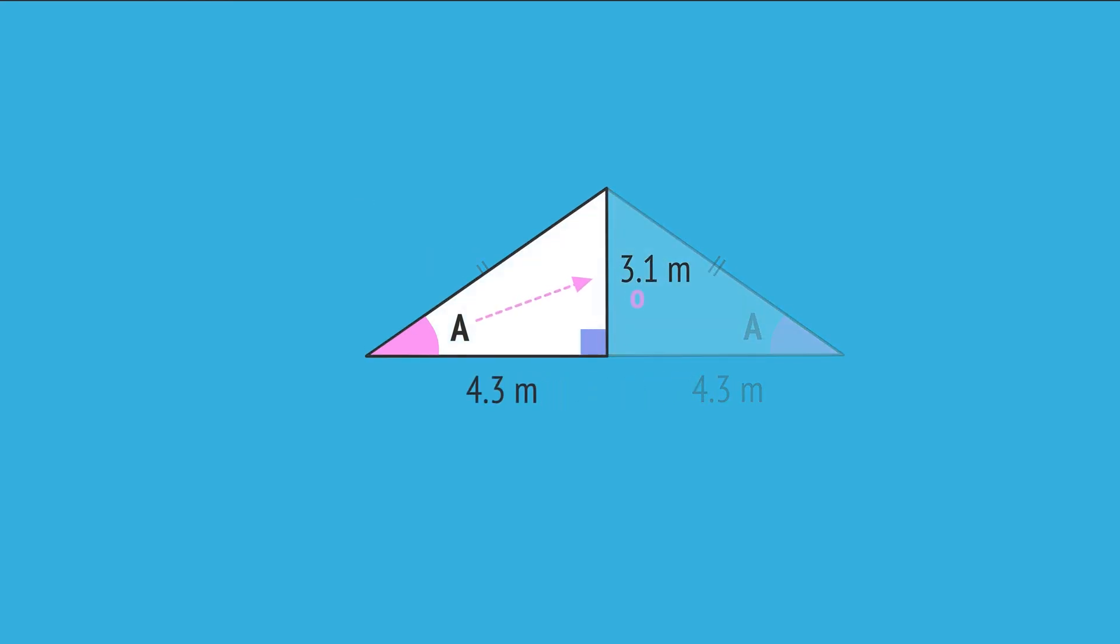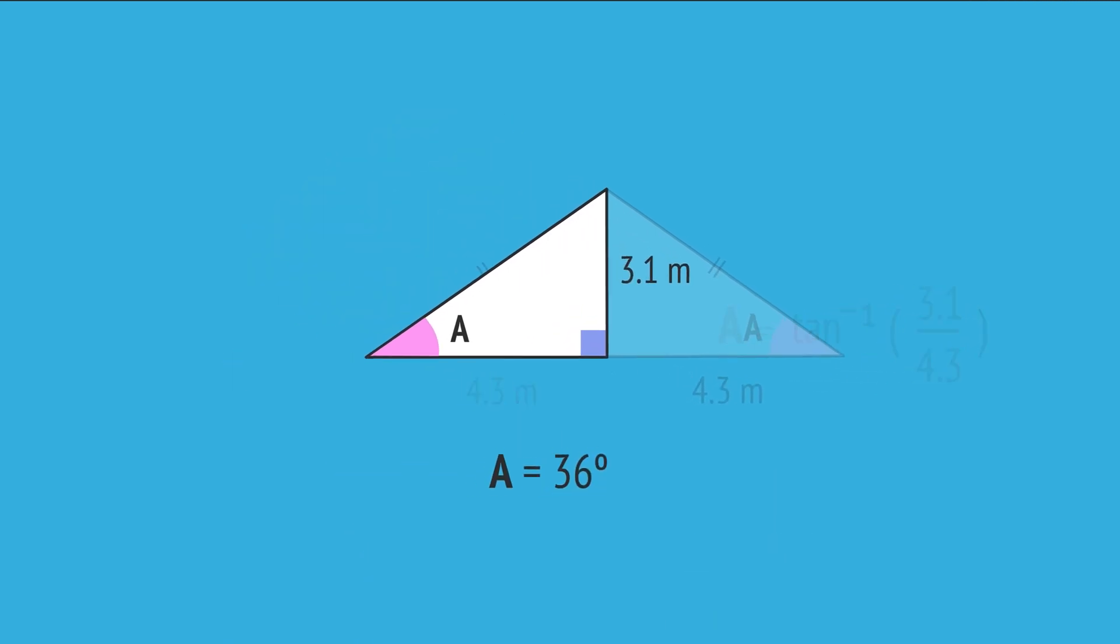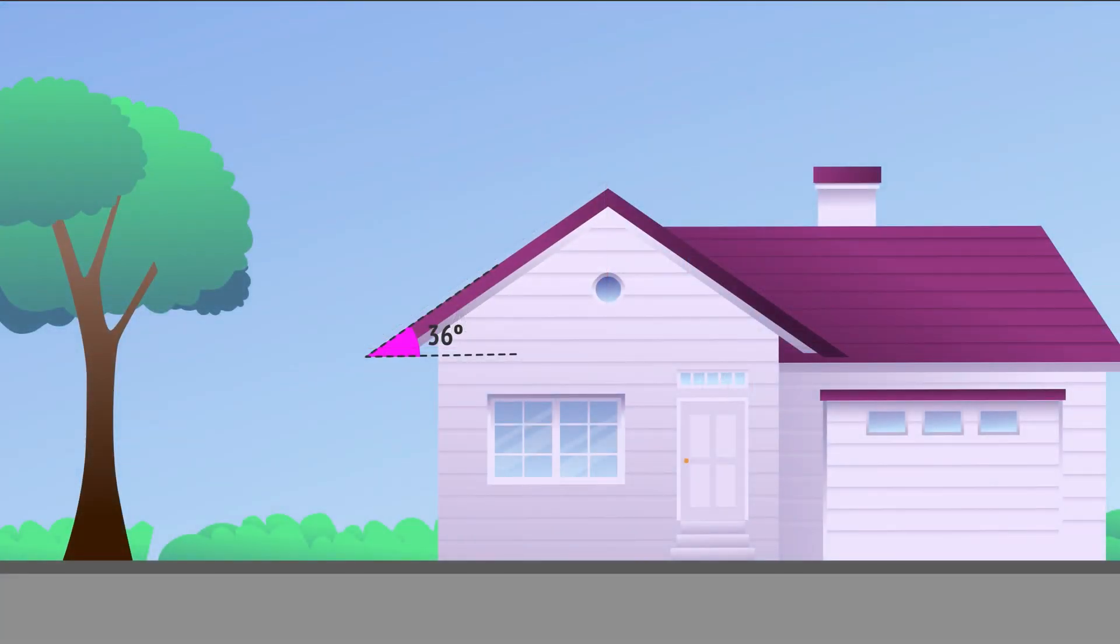We have the opposite side and the adjacent side, so we use the tangent ratio. Substituting the values into the formula, and using the inverse tangent function, we enter this into a calculator, giving us an answer of 36 degrees when rounded to the nearest degree. And so, the angle of inclination of this gable roof is 36 degrees.